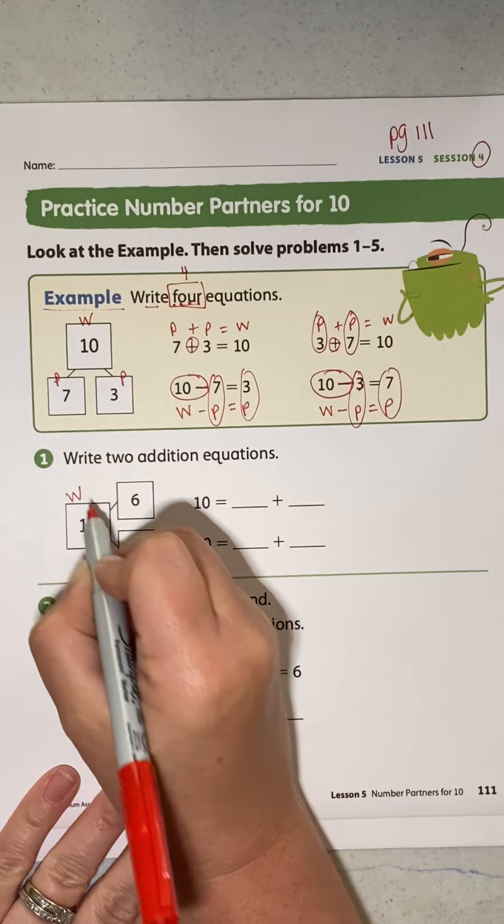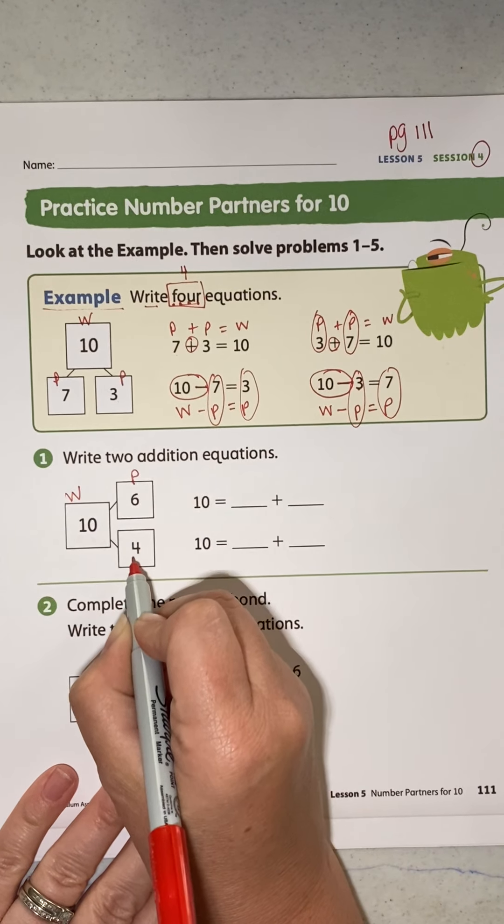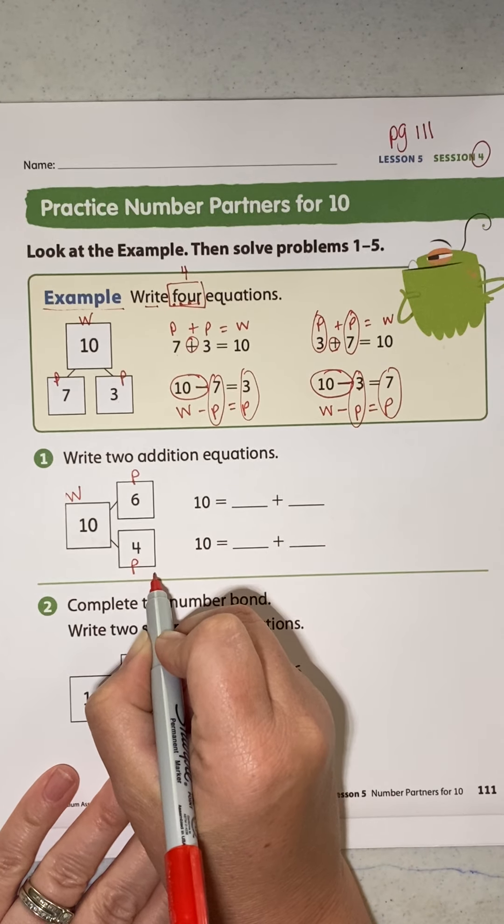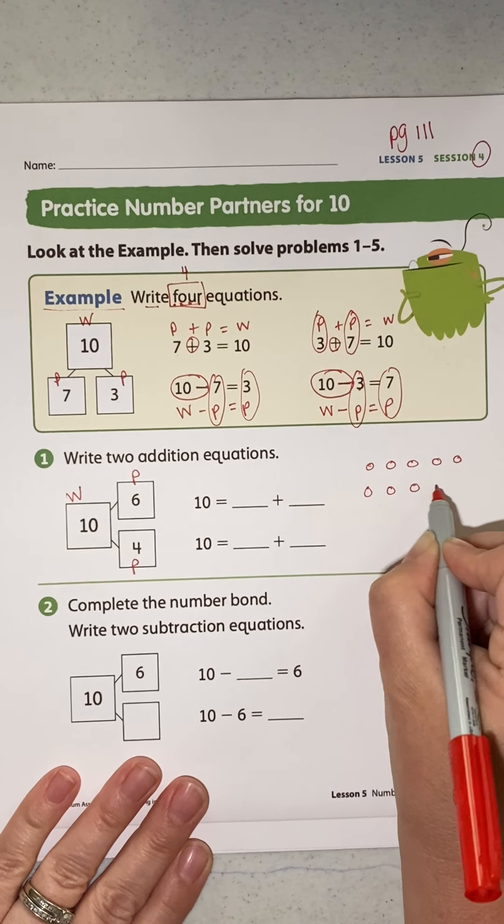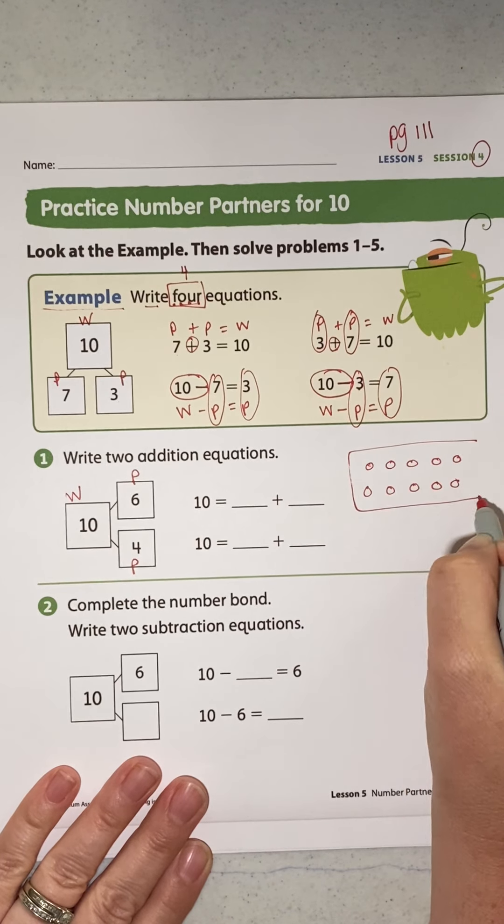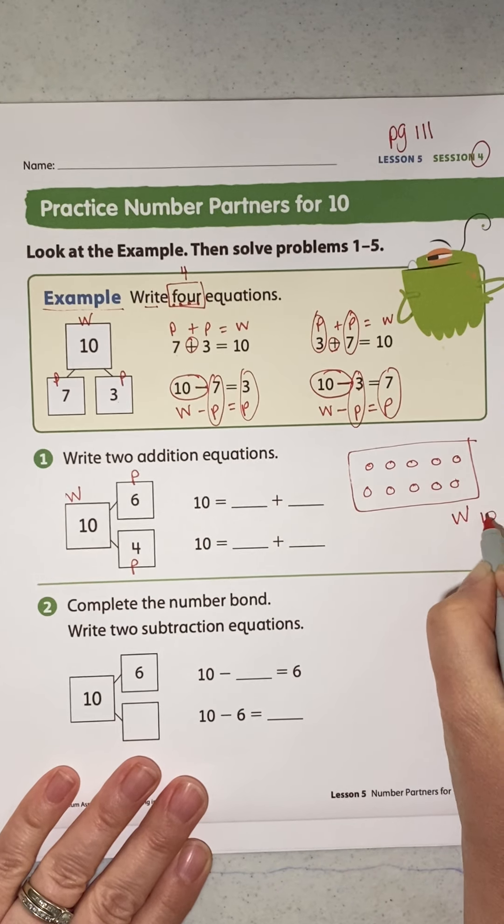10 is your whole. 6 is your part, 4 is your part. Right? 1, 2, 3, 4, 5, new line, 6, 7, 8, 9, 10. 10 is your whole. That's all of them together. Right? 6 is a part.